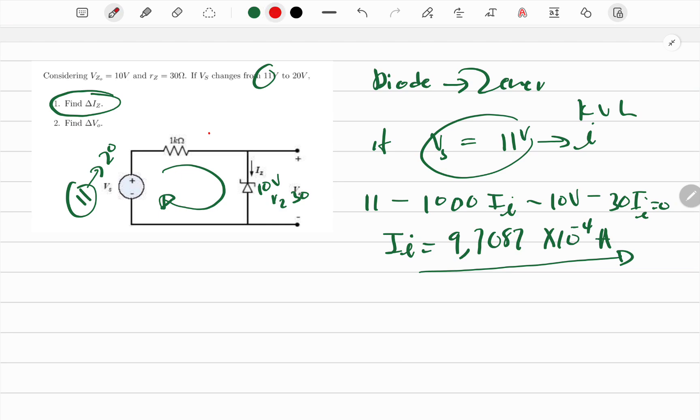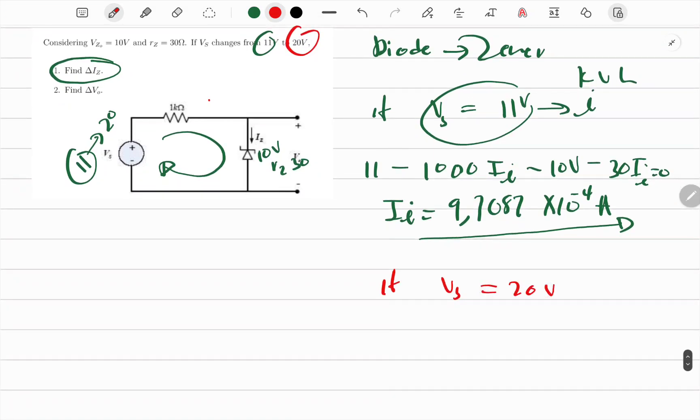We could make it to milliamperes if you prefer, that's also good. Let me move and now what if Vs was now 20 as they said, because that's how they varied it. Then only this will change here. We'll have 20 minus everything will be the same, 1000 I minus 10V minus 30 times I. It's not initial now, let me call this one I at 11 and this I at 20. I at 20 now is equal to zero, so this is the loop around but now we're focusing on 20.